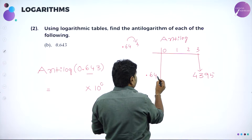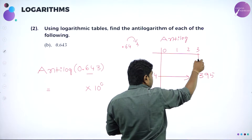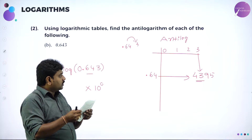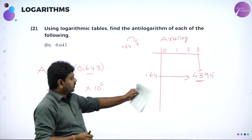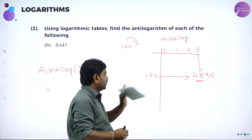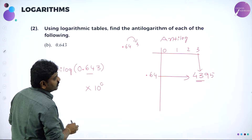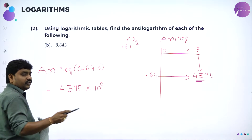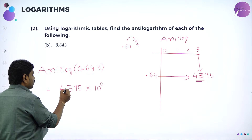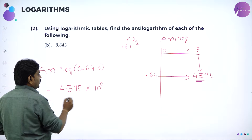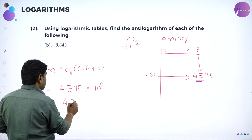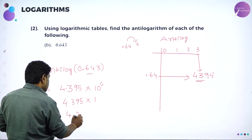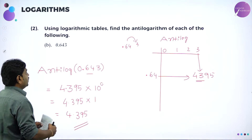0.64 under column 3 gives you 4395. Place the decimal after the first digit: 4.395. Multiply by 10 power 0, and since anything to the power 0 is 1, the answer is simply 4.395. So anti-log of 0.643 is 4.395.